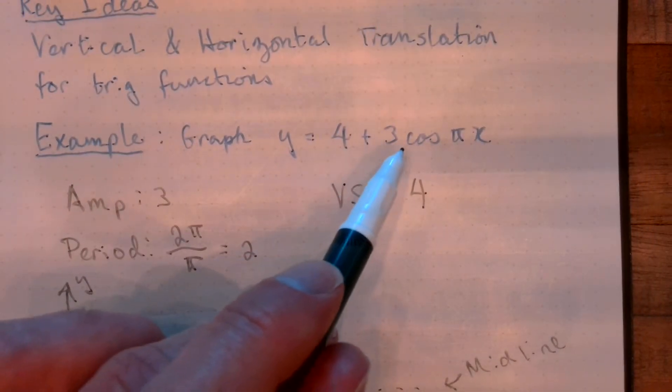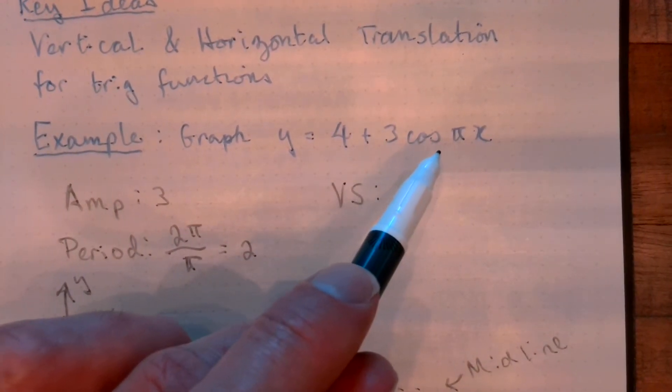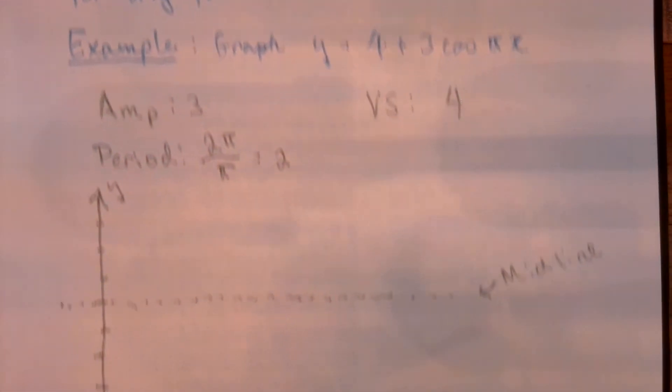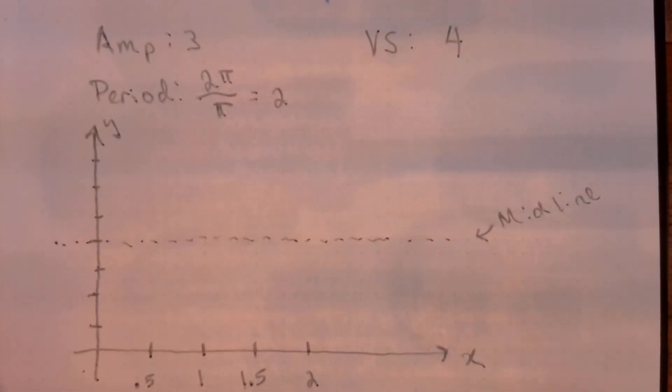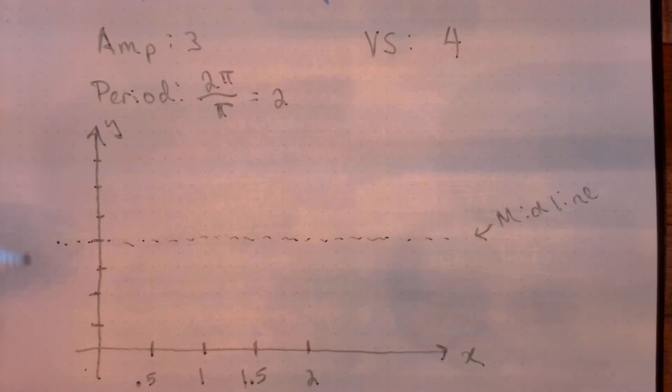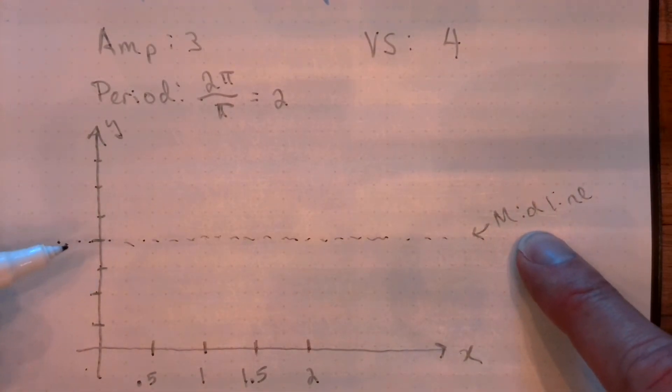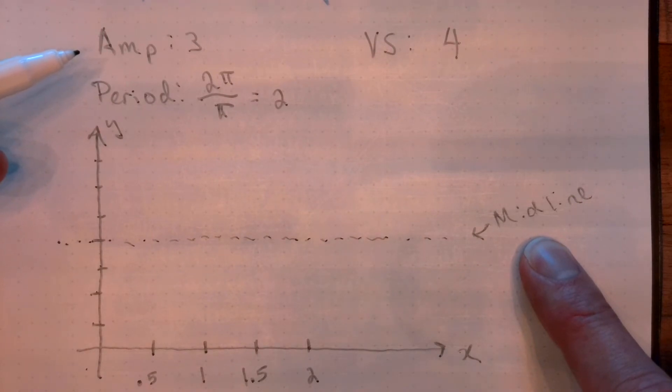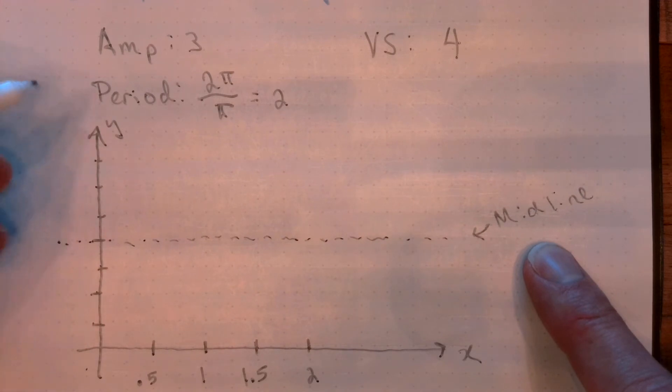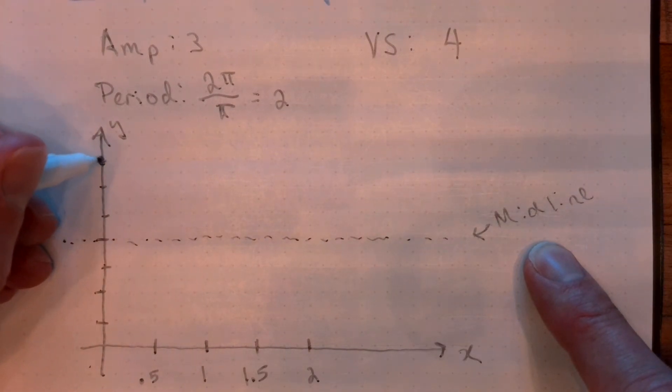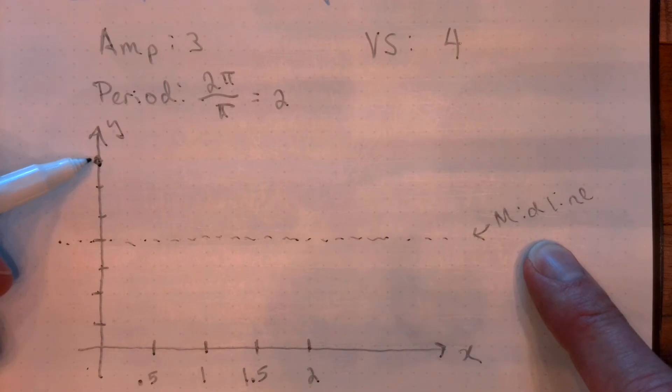We are dealing with the cosine function. You remember the cosine function starts at the top of a cycle. Now, here's the thing. We've got to combine the vertical shift and the amplitude. The vertical shift tells us the midline. The amplitude tells us how far above or below the midline we're going to go. So, my function is actually going to start out up here, 3 units above the midline. Because it's a cosine function, it starts at the top.